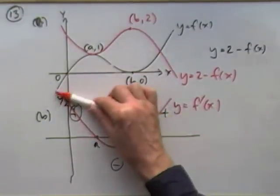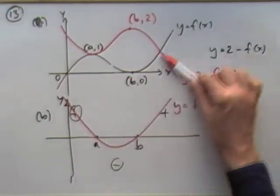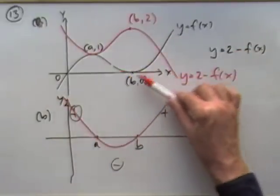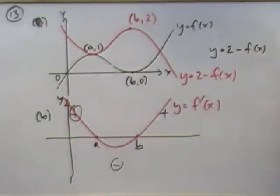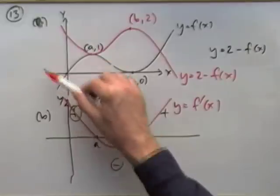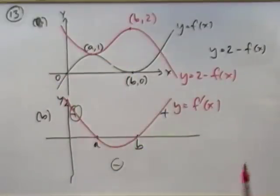That's what you'd expect because it's a cubic curve like y equals x cubed plus the rest — the derivative of that should be a parabola, y equals x squared.